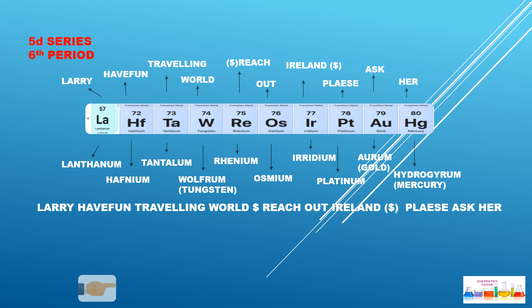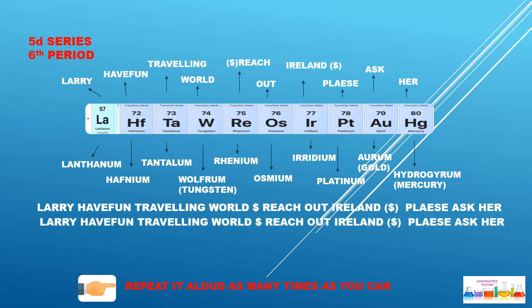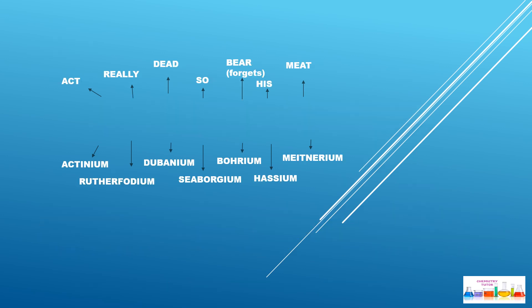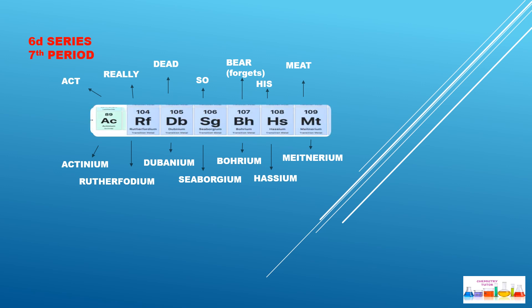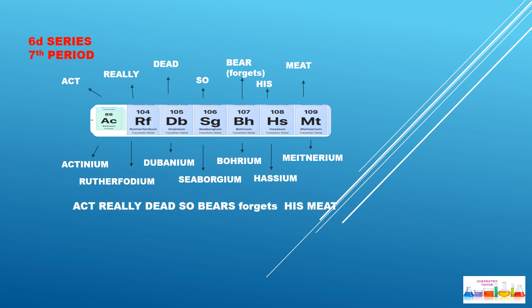Follow the tip: repeat it aloud as many times as you can. Last is the 6d series, which is the seventh period. The mnemonic is: 'Act really dead so bear forgets his meat.' Act = Actinium, Really = Rutherfordium, Dead = Dubnium, So = Seaborgium, Bear = Bohrium, Forgets = ?, His = Hassium, Meat = Meitnerium.